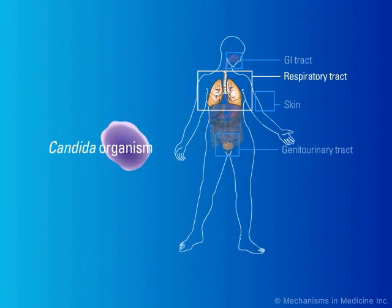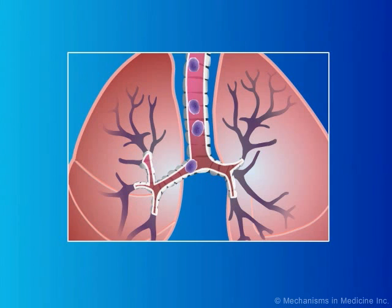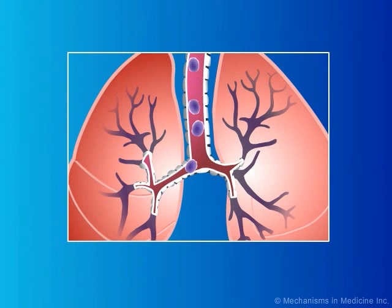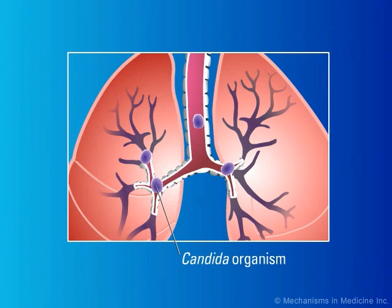The respiratory tract may also be an organ that harbors Candida organisms. These organisms may be carried into the trachea and bronchi through the aspiration of oropharyngeal contents. Usually, invasion into the lung tissue does not occur unless there is presence of profound and prolonged neutropenia. If profound and prolonged neutropenia does occur, Candida organisms may invade directly into the lung tissue from the bronchioles, resulting in invasive fungal infection.